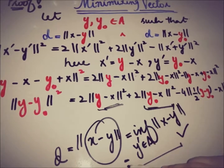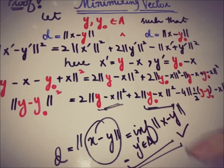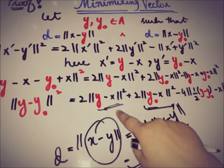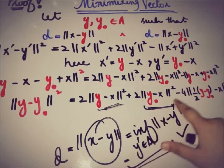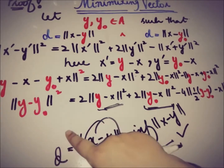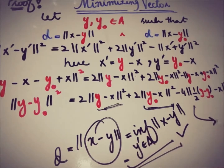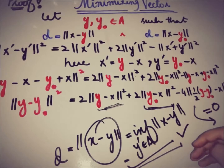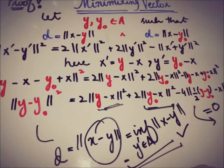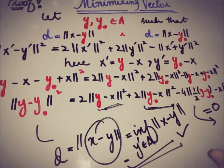Since ||X - Y||² = D² and ||X - Y_0||² = D², the parallelogram law gives ||Y - Y_0||² = 2D² + 2D² - 4D² = 0. Therefore ||Y - Y_0|| = 0, which by the norm definition implies Y - Y_0 = 0, so Y = Y_0. There cannot be two distinct elements in A satisfying this property; the element is unique.